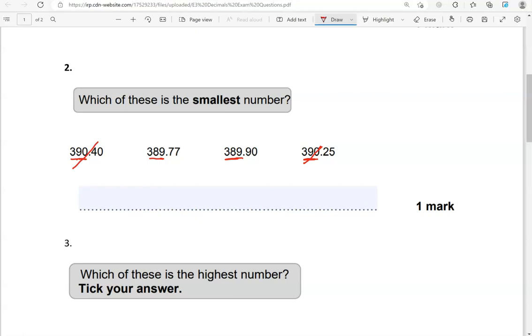So, we're going to focus on these two, 389.77 or 389.90. This is the smallest out of the two because we've got 77 there and not 90. Remember, 77 pence and not 90 pence. So, 389.77 is the smallest number.